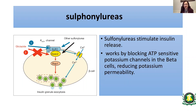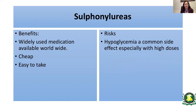Sulfonylureas are another large, relatively inexpensive class of medication used worldwide. They work by stimulating the release of insulin, blocking ATP-sensitive potassium channels in the beta cells and reducing potassium permeability. They are cheap and easy to take, but because they work by releasing insulin they carry a very high risk of hypoglycemia. Recent studies have also linked sulfonylureas with heart failure, and with newer medications now available, the use of sulfonylureas is relatively decreasing.